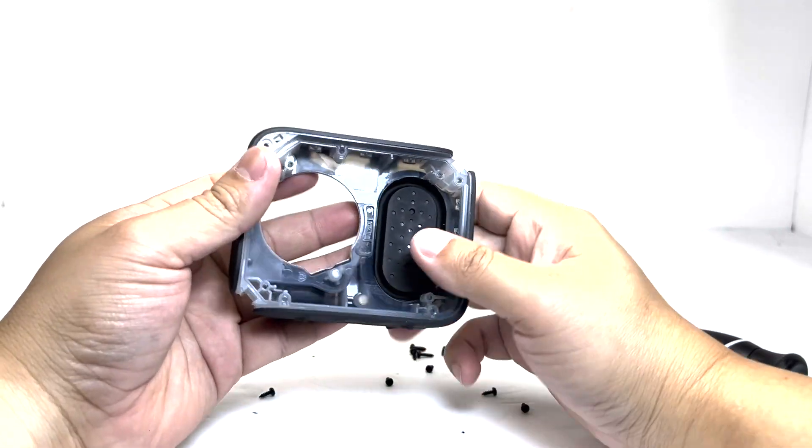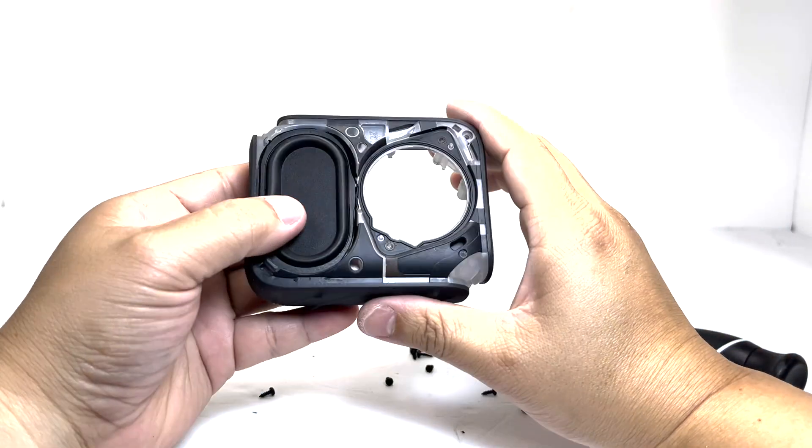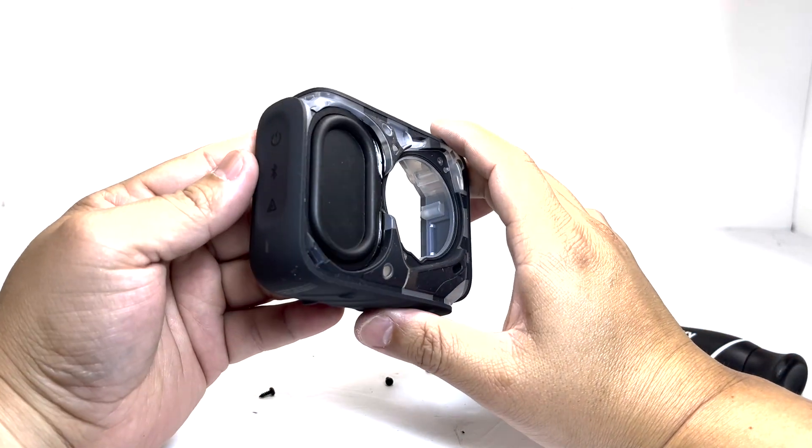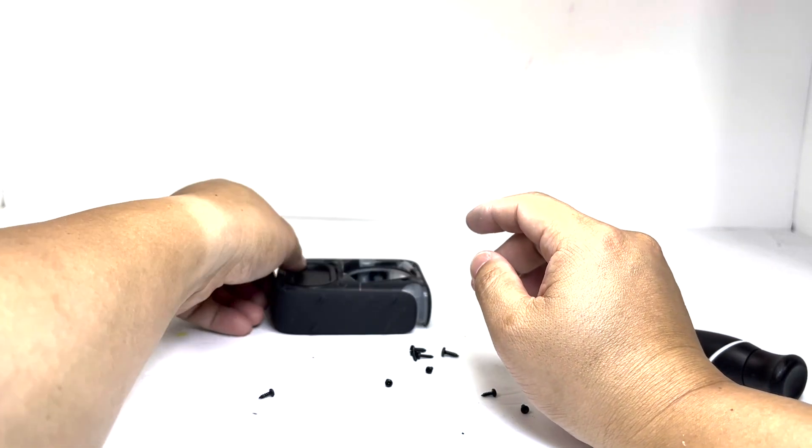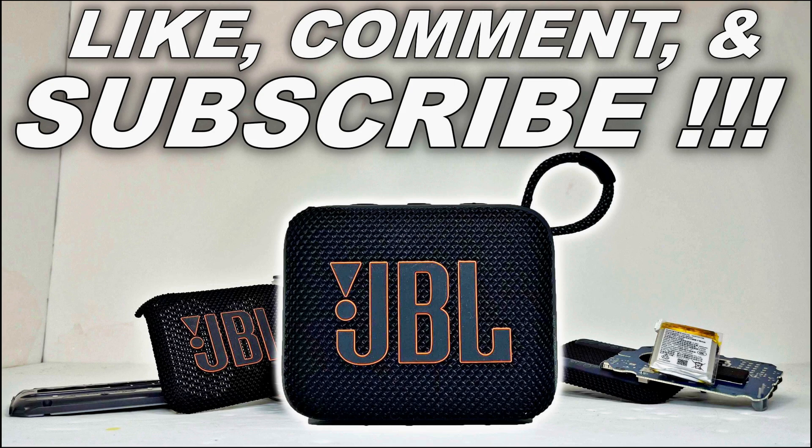And this completes the teardown of the JBL GO 4. It has been a straightforward process with minimal parts to disassemble. I hope you find this teardown enjoyable and if you did, remember to smash that like button and subscribe if you haven't already. There are many more exciting JBL releases that I am anticipating tearing down, so stay tuned. Thank you for joining me and I look forward to seeing you in the next teardown.